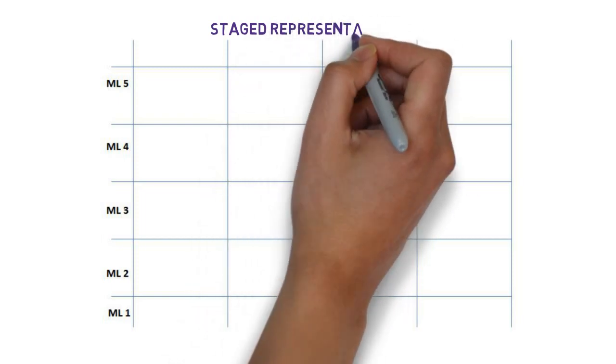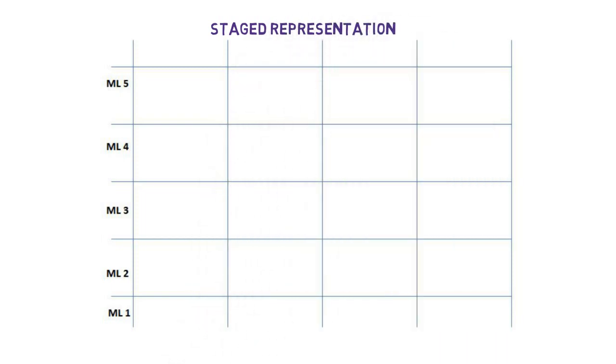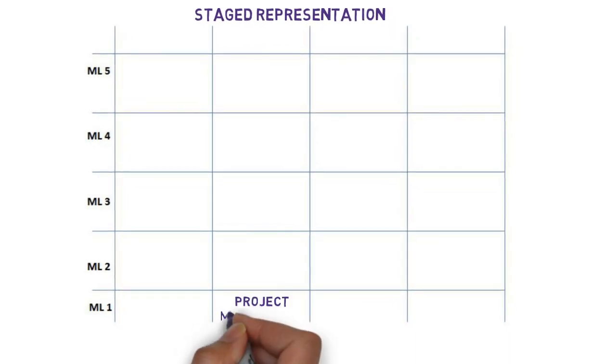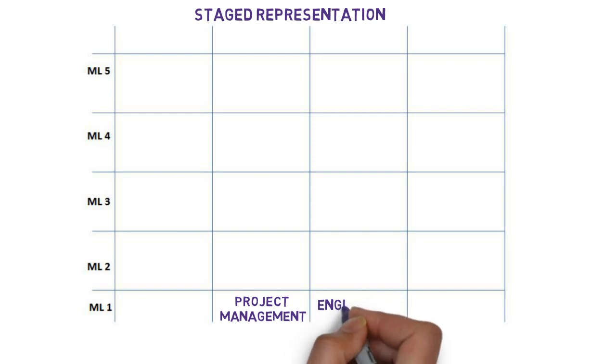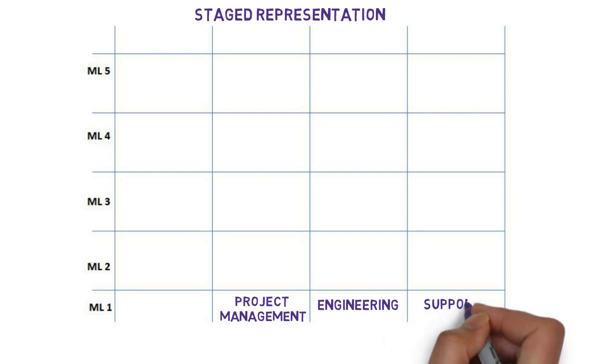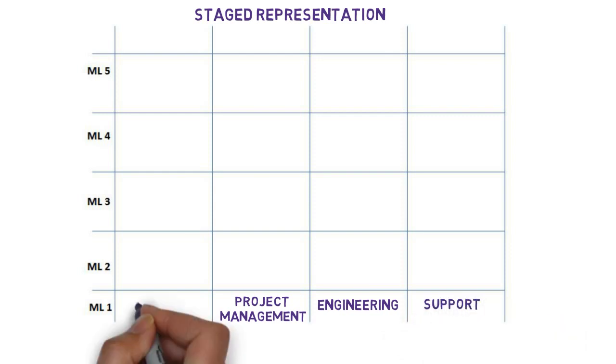It's called the staged representation. There are five levels of maturity, each of which represents an organizational plateau of overall capability. Each stage has a predefined set of process areas assigned to it for cohesive implementation and results. Within a maturity level, process areas are categorized into four categories. The project management and engineering categories are obvious, and they're augmented by process areas that support those two domains, as well as process management areas designed to provide the infrastructure needed for use across the organization.